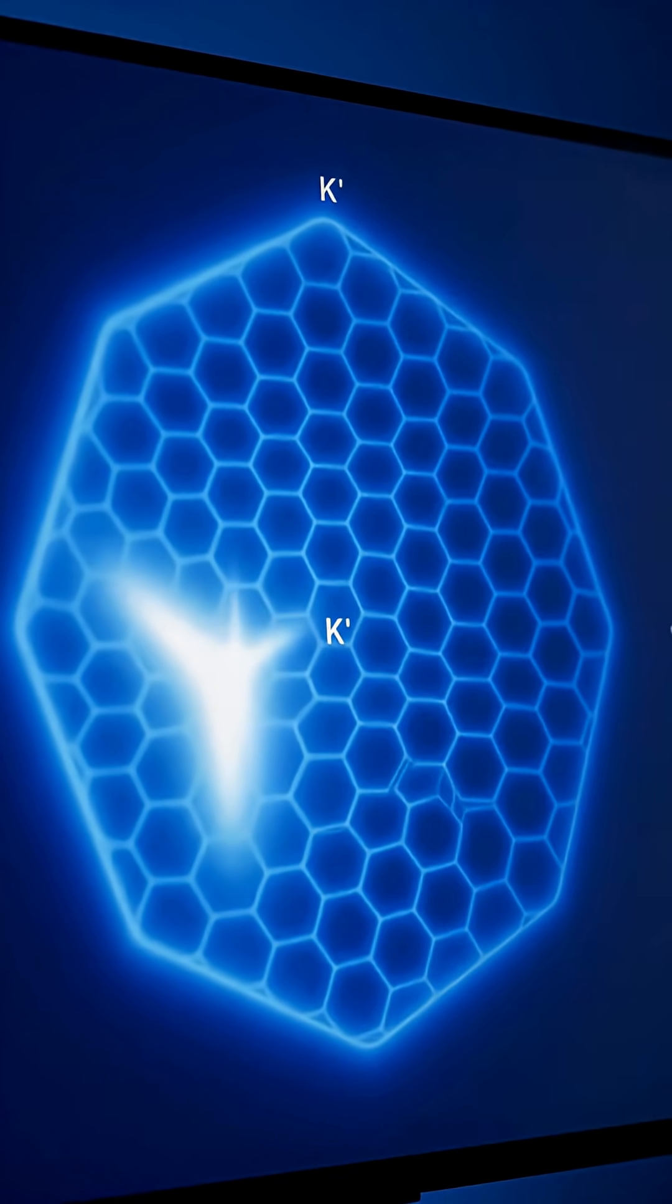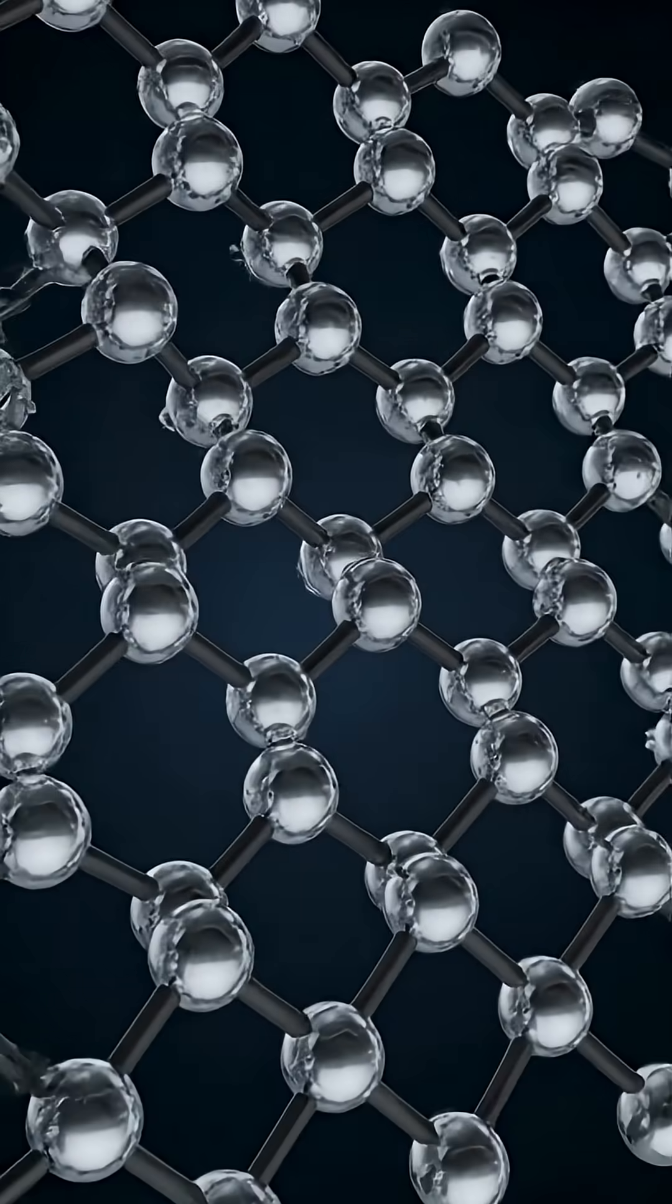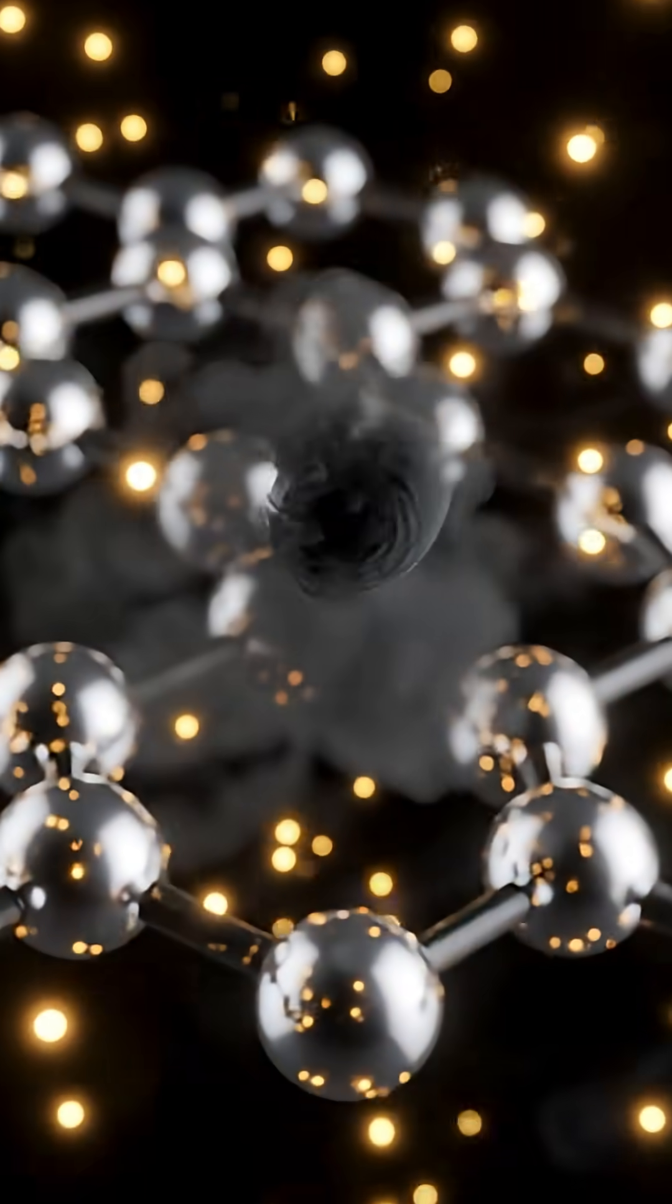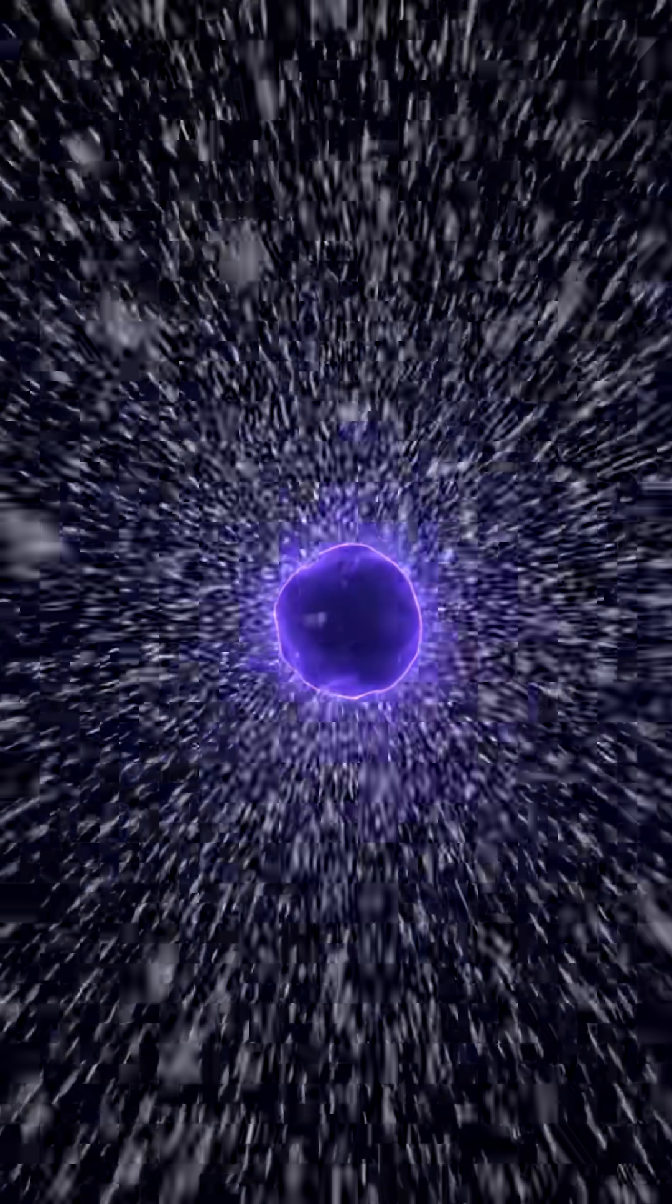Using a momentum microscope and time-resolved ARPES, the team saw over 85% of the excitonic population shift into these valley-polarized dark states. That's not noise. That's a potential memory element.